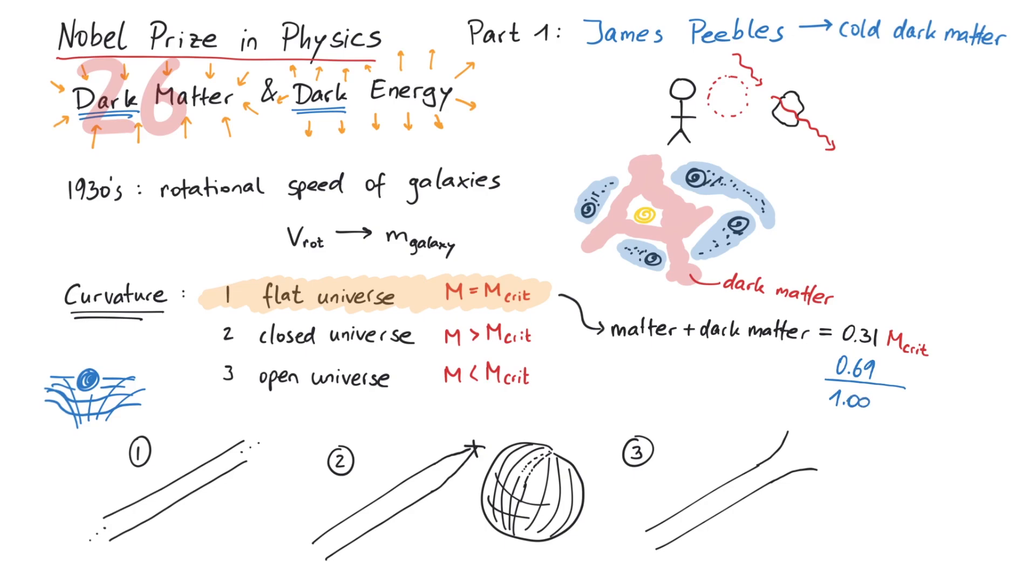Here again, James Peebles was one of the leading scientists who proposed a solution in 1984. Re-introducing Einstein's cosmological constant, which was now seen as the energy of free space, energy of the vacuum. This together with ordinary matter and cold dark matter, is enough to support the calculations of a flat universe.